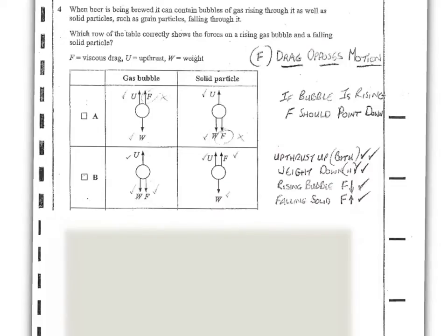So in general terms, what we're looking for is both upthrusts acting in the upward direction, both of the weights acting in the downward direction. The rising bubble will have a downward value of F and the falling solid will have an upward value of F. And that's what happens in B. Both the upthrusts are up. Both the weights are down. The rising bubble has a drag pointing against its motion. The falling solid particle has a drag pointing against its motion. So this is the example that is correct. Now we can look at the others just out of interest.